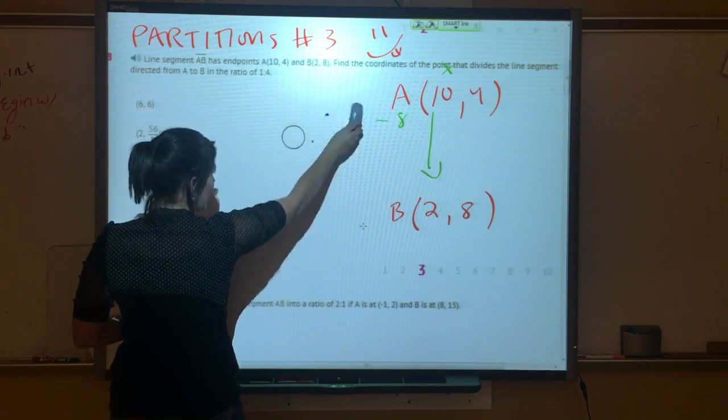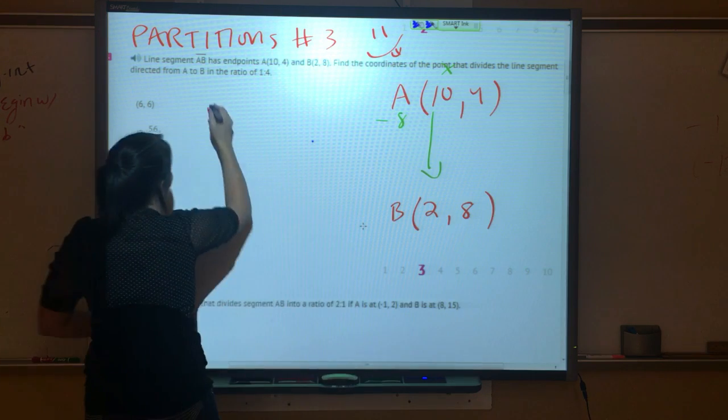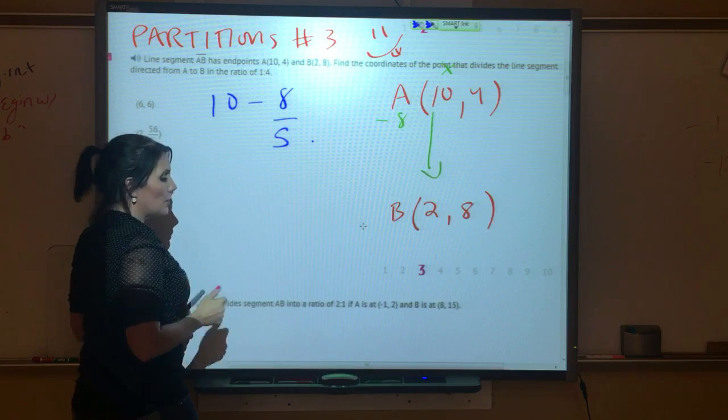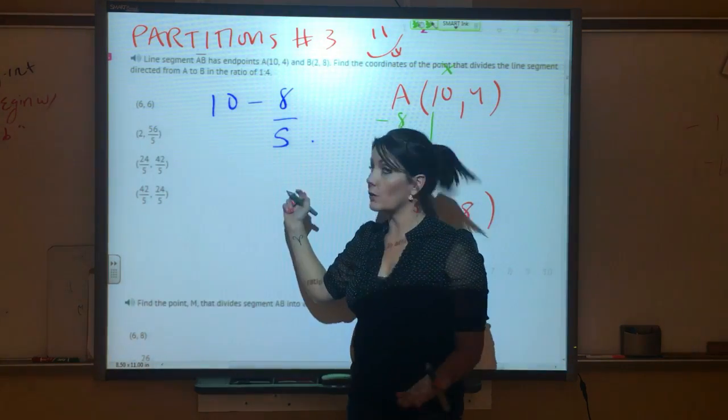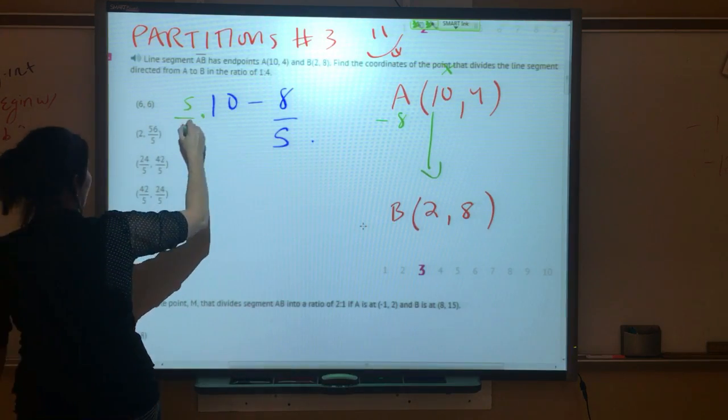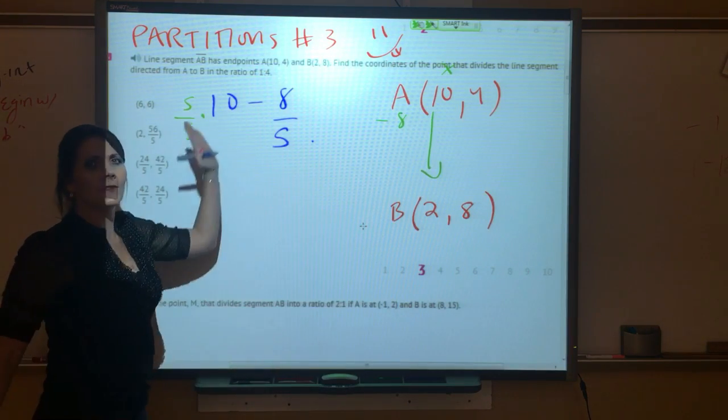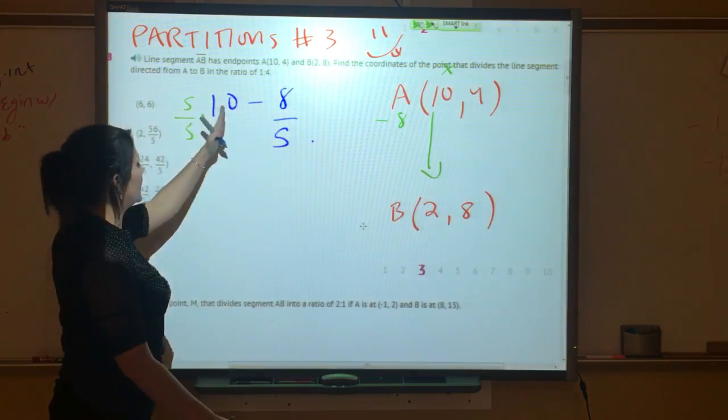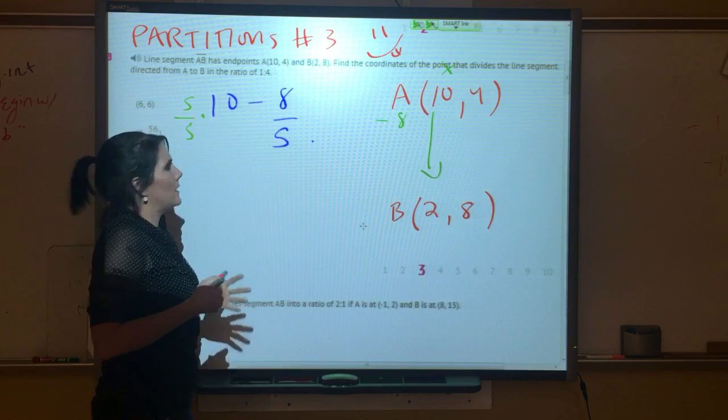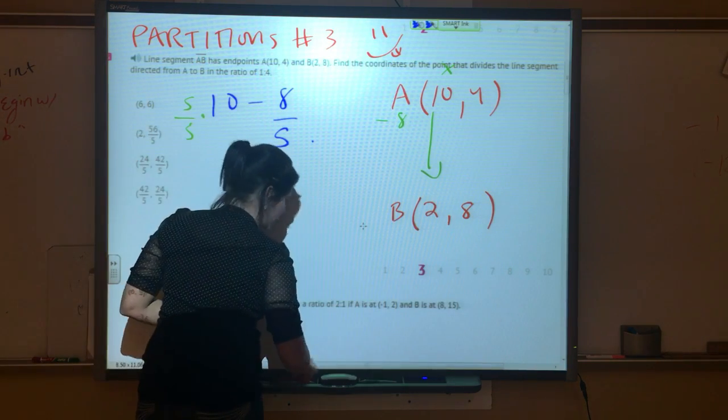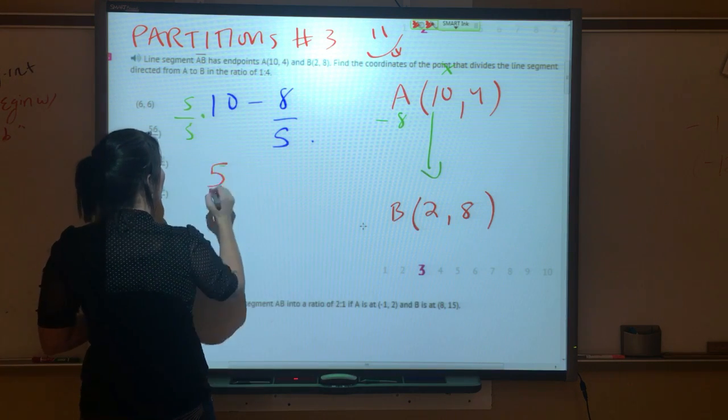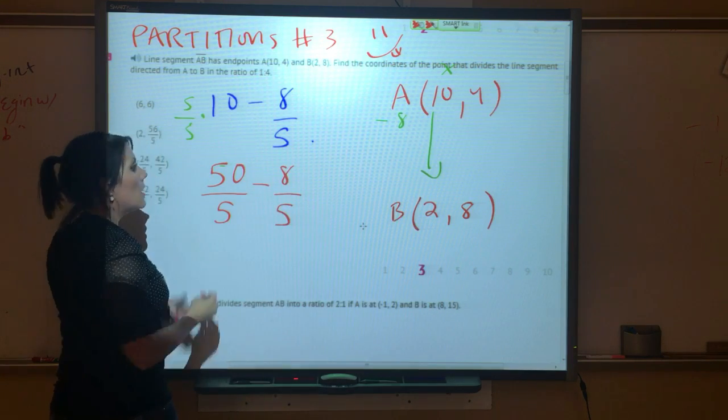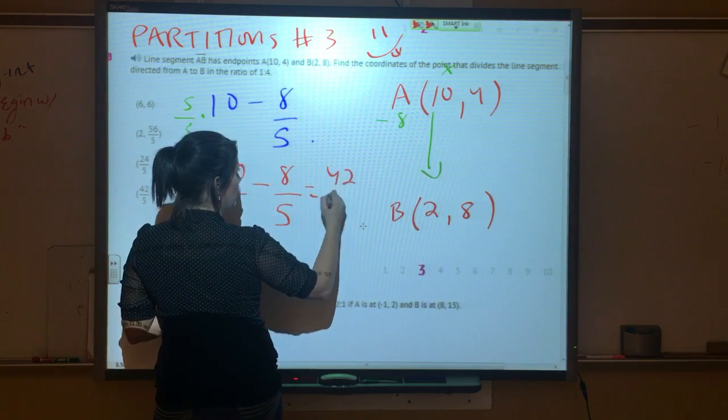Please do not get scared of the fractions, guys. This is easy peasy. Fractions are your friends. Take your 10, and we are minusing 8/5. So remember we have to have a common denominator here. We're going to use 5. We're going to multiply 10 by 5/5, which we're not changing the number 10 because 5/5 is 1, and when you multiply anything by 1, the number stays the same. We're just changing the way that it looks. So we're going to get 50/5 - 8/5.